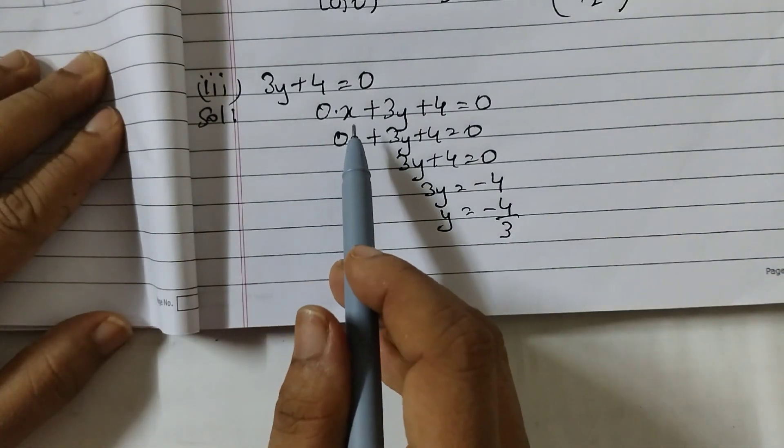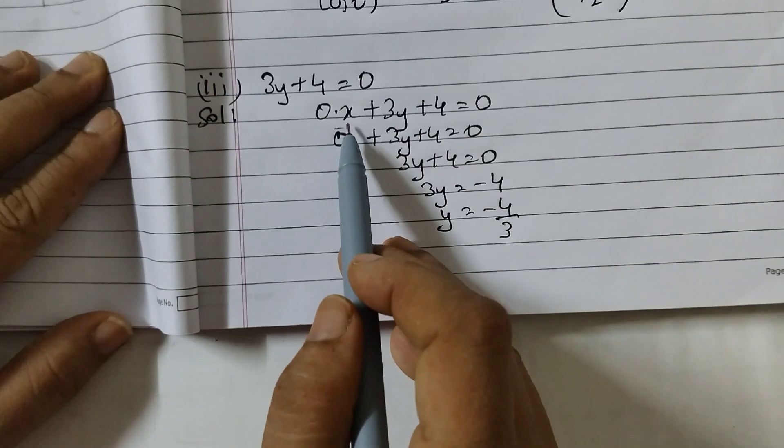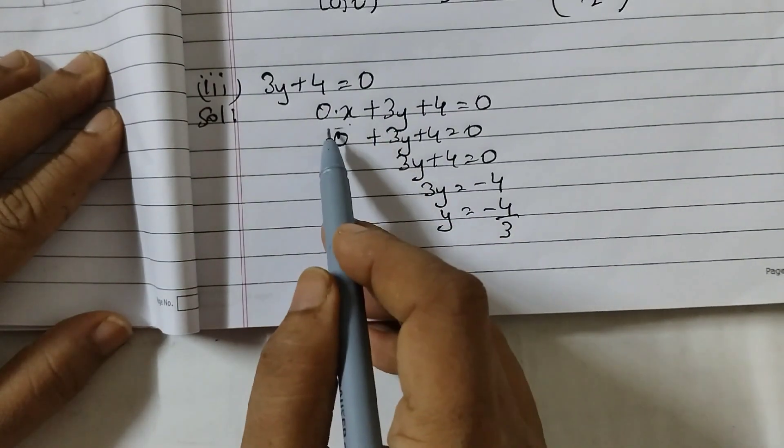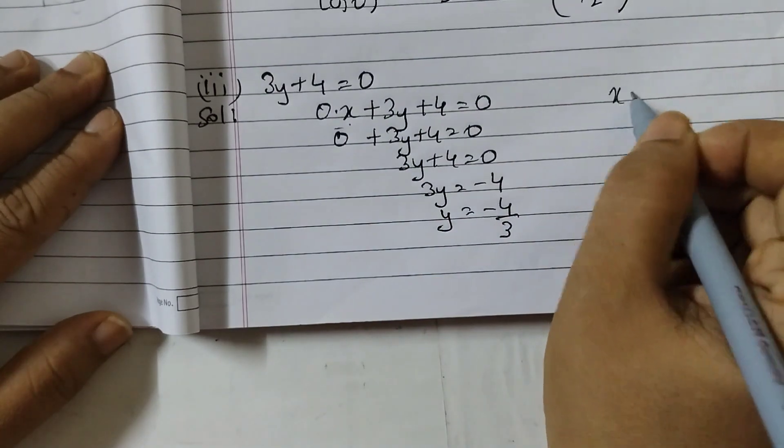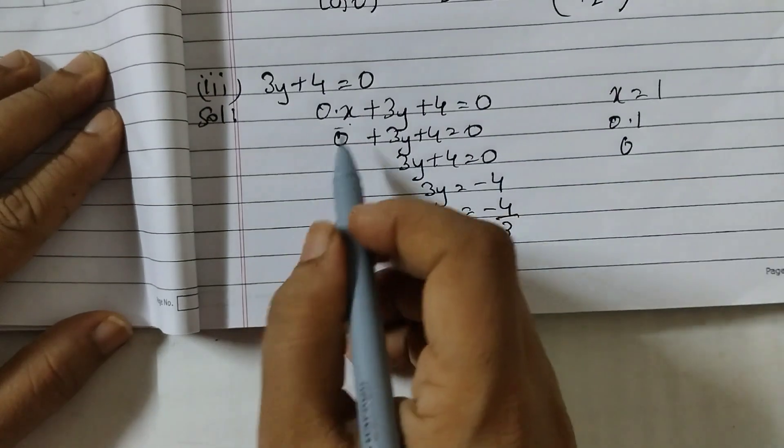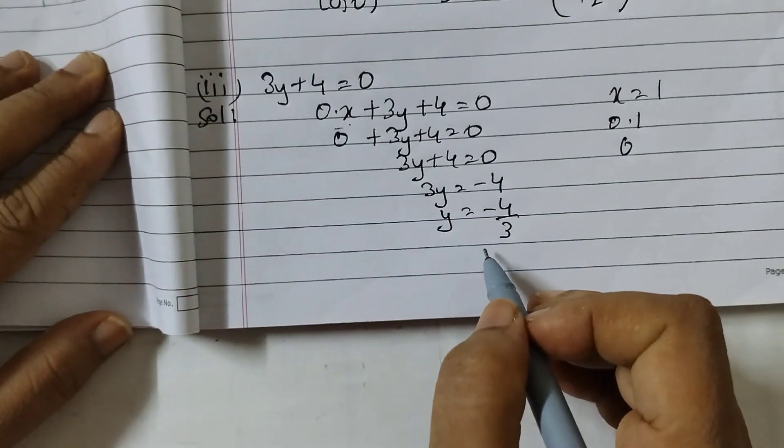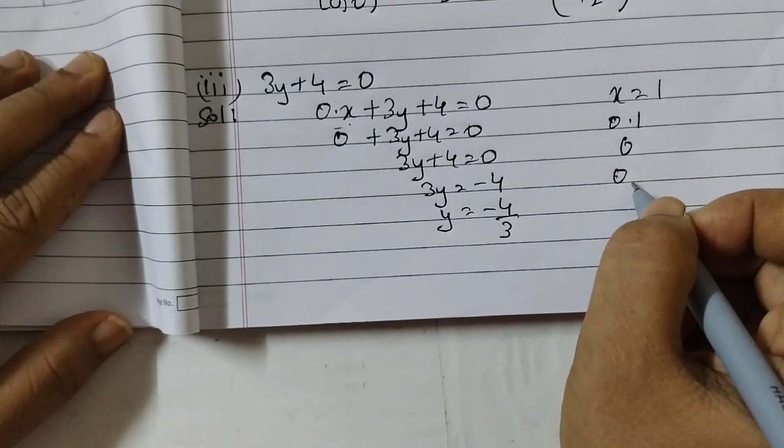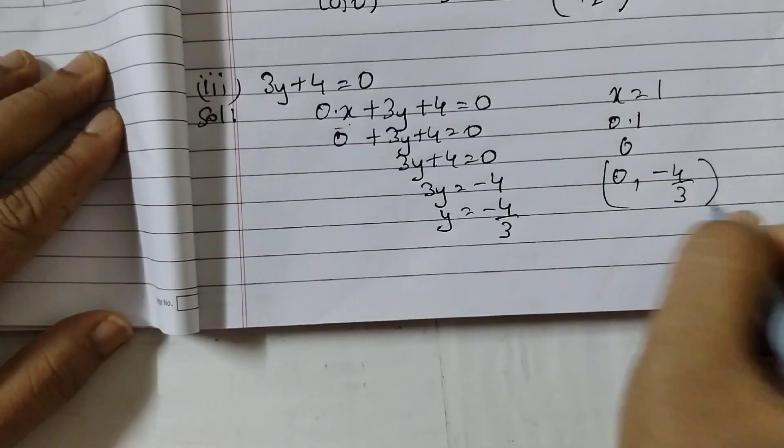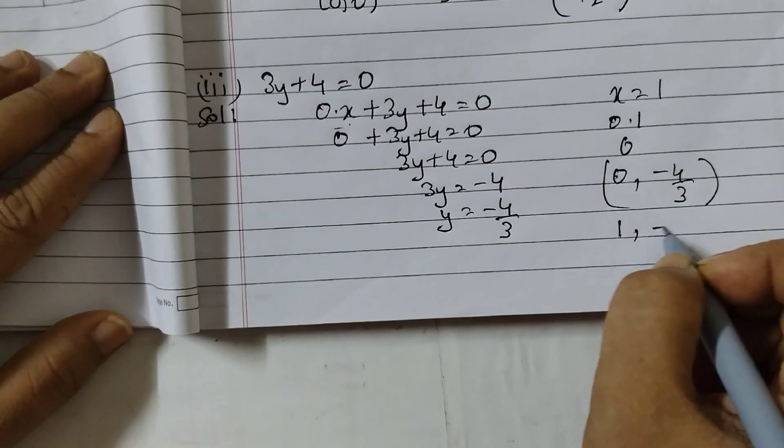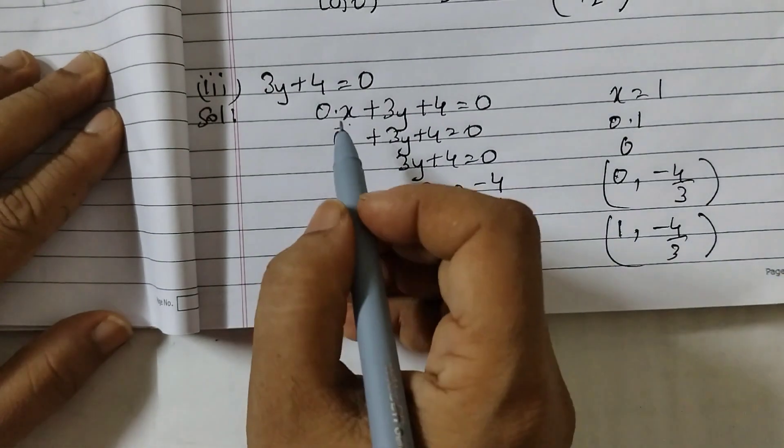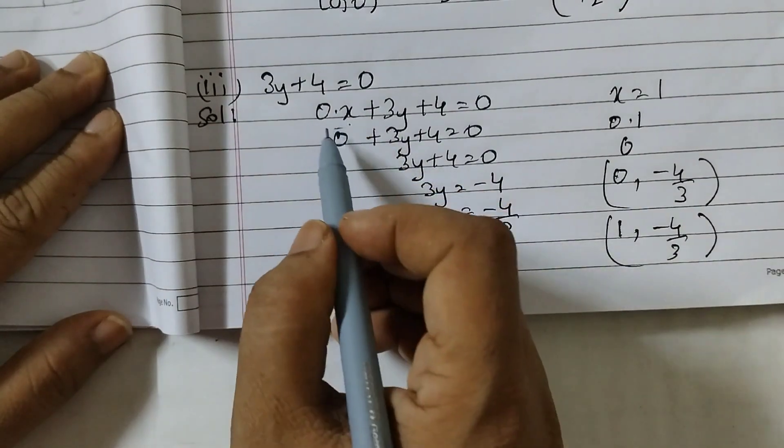If I take any value for x because the equation is in this form, if I take any value for x I will still get the same value because this term will become 0. Let's say if I take x is equal to 1. So 0 into 1 is 0. So this term will become 0.